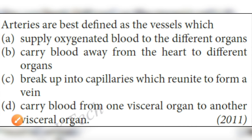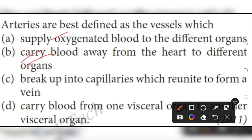Arteries are best defined as vessels that: A — supply oxygenated blood to different organs; B — carry blood away from the heart to different organs; C — break up into capillaries which reunite to form a vein; D — carry blood from one visceral organ to another. The answer is B, because every artery without exception takes blood from the heart to different organs. Option A is wrong because of the exception of the pulmonary artery, which carries deoxygenated blood. Option C is correct but the most appropriate answer is B.